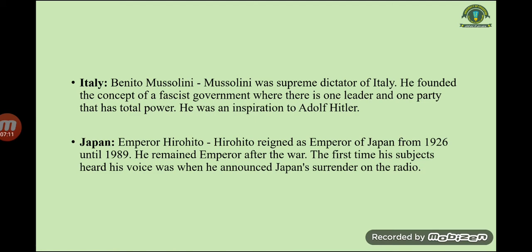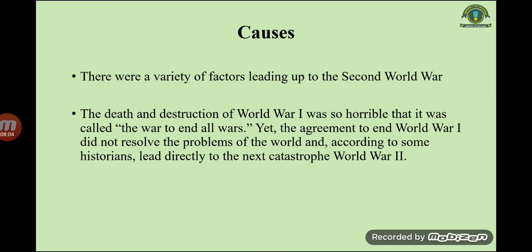In Japan, Emperor Hirohito reigned as emperor from 1926 until 1989. He remained emperor after the war. The first time his subjects ever heard his voice was when he announced Japan's surrender on the radio — this highlights the nature of the connection between the emperor and his subjects.